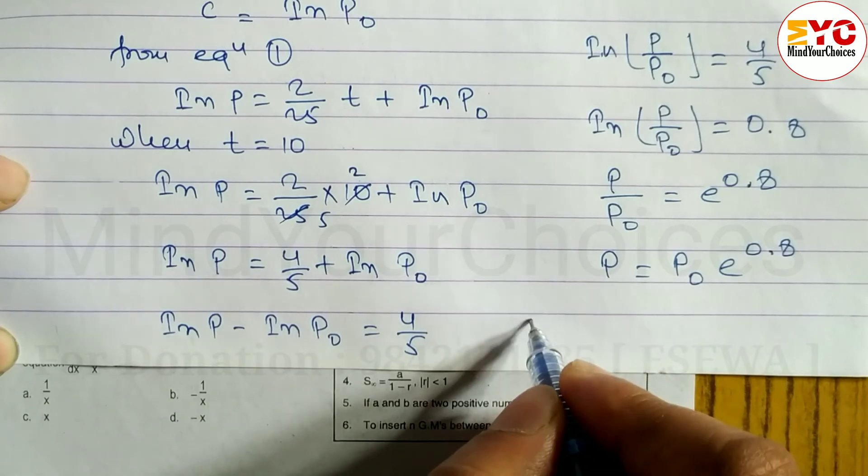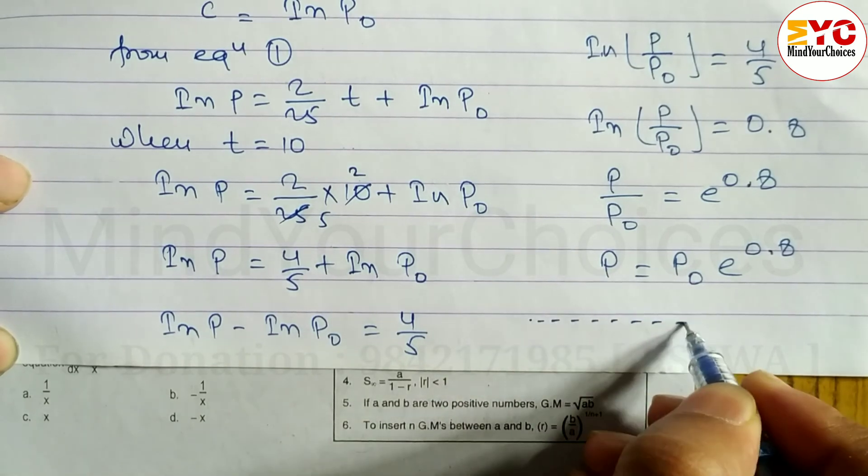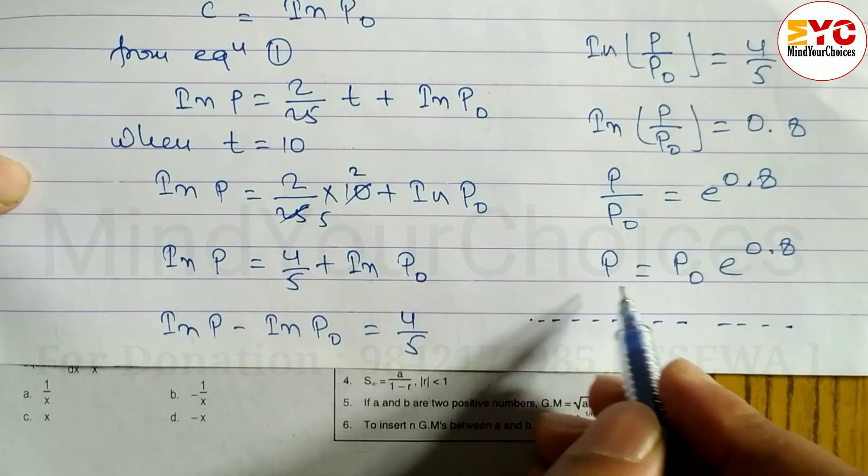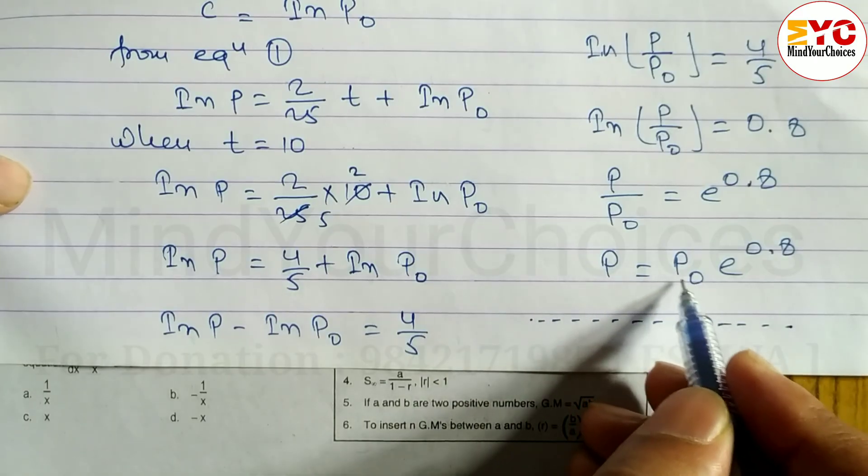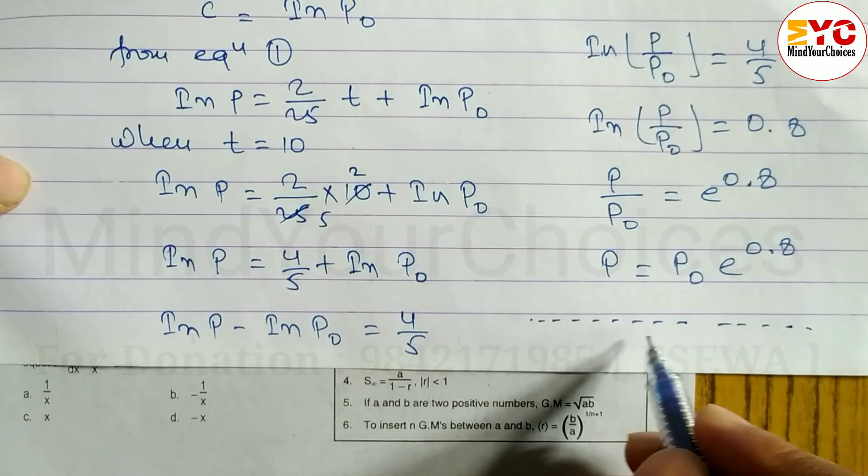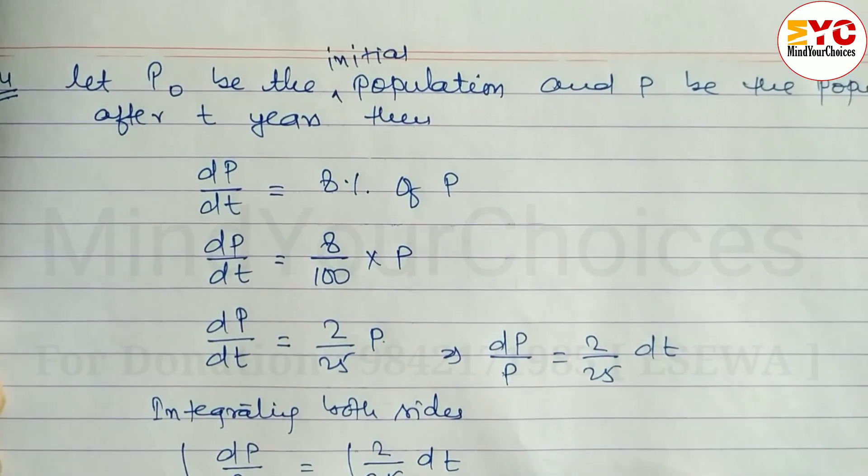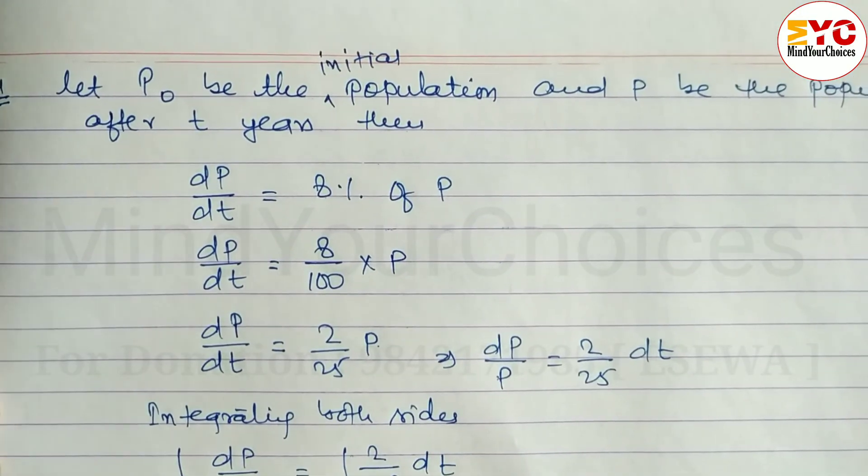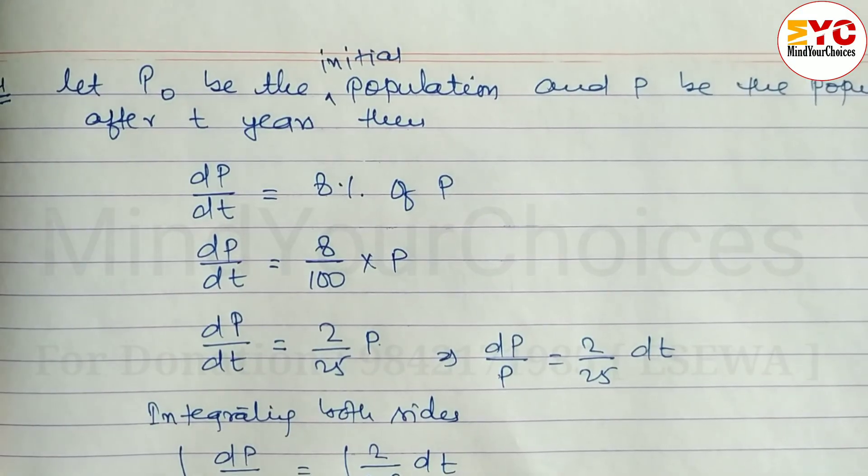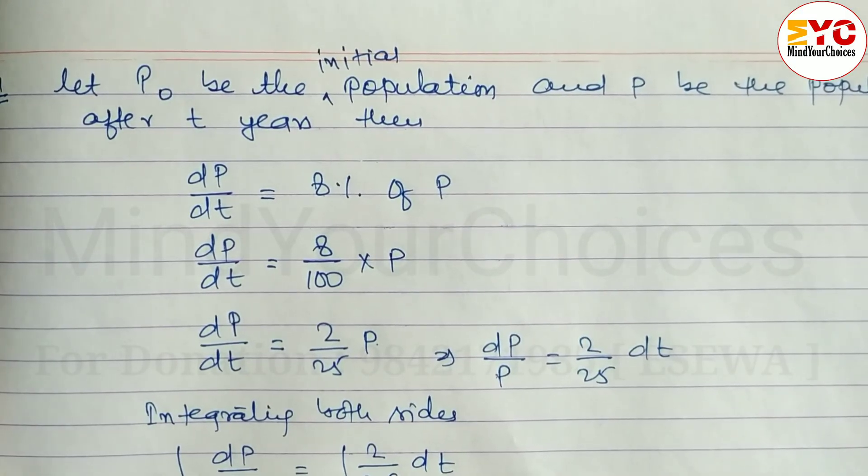Which is the required population after 10 years. P is the population after T years and P naught is the initial population. This is the required population after 10 years. Hope you understand this question taken from differential equation and its application. Please like, follow, subscribe, and share with your friends. Thanks for watching till last. Keep supporting and keep sharing.